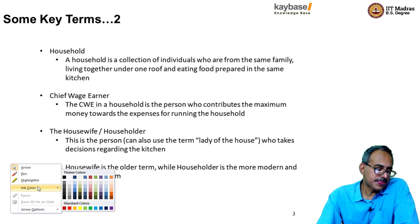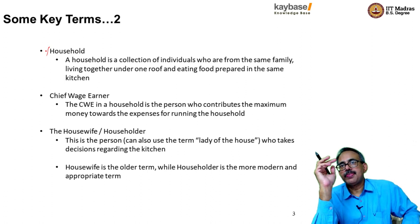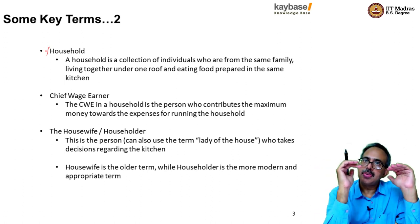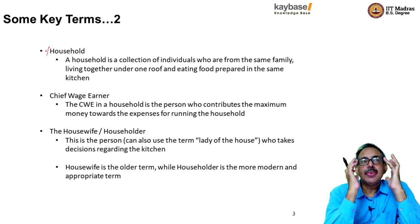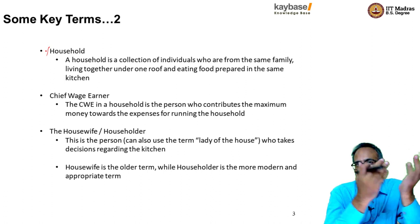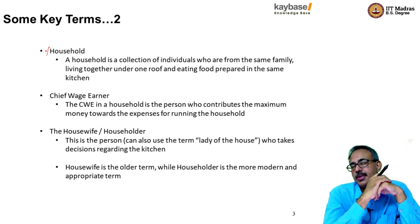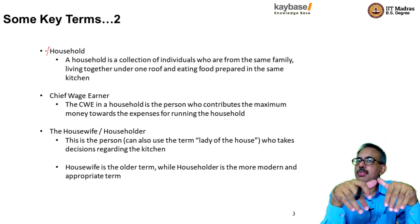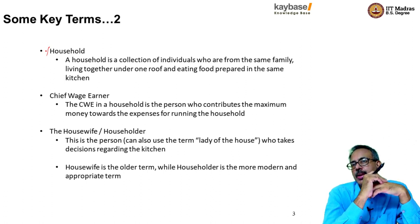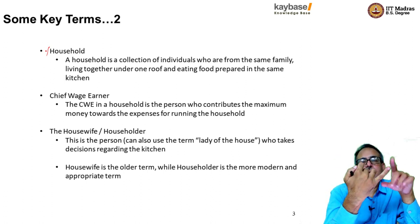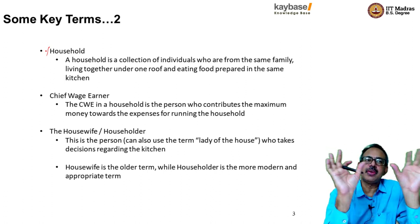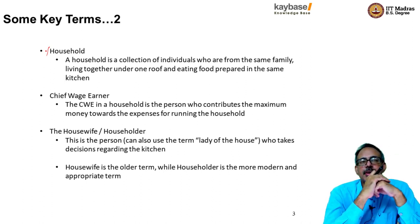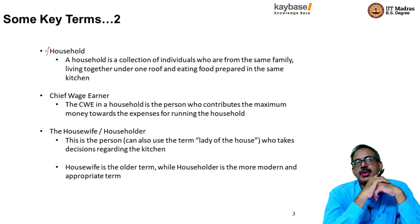A household is a collection of people who live together under one roof and who eat food prepared at the same kitchen. That definition might also apply to a hostel — 160 students living under one roof eating from the same kitchen — but a hostel is not a household. So there are three conditions: people belong to the same family, live together under one roof, and eat food prepared from the same kitchen. Even within a building, if two sub-units of a family have different kitchens, they are considered two different households.